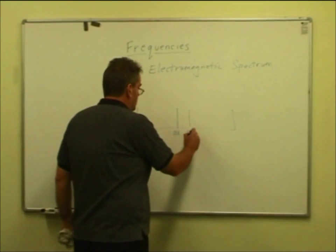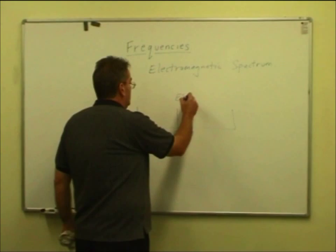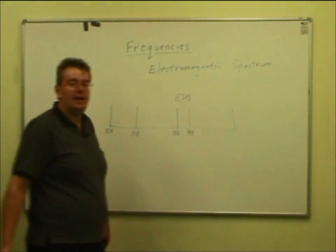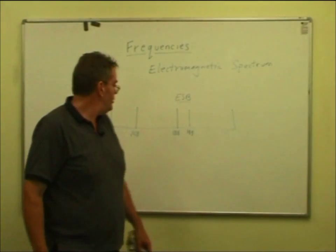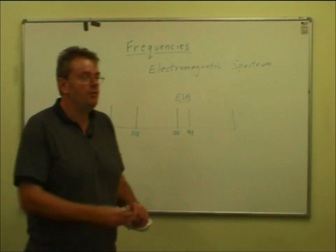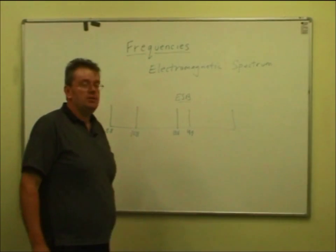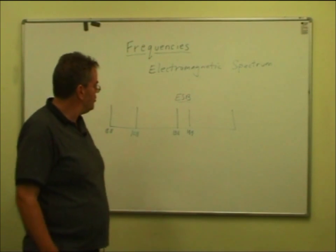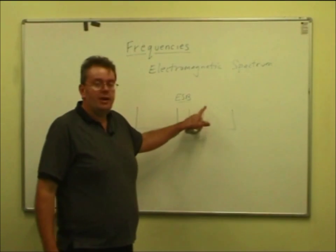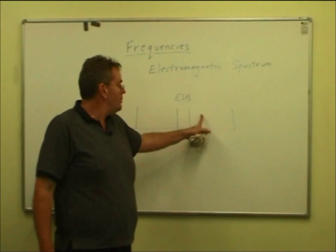From about 118 to 138 is air to ground voice AM communications. 138 to 144 is the ESB, emergency services B-band, and the ambulance service is in there. There may be fire service in there as well, and civil defence. Department of Conservation got their repeaters in there. 144 to 148 is the 2 meter amateur band.